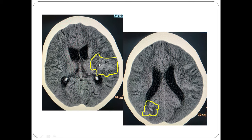In higher cuts, we can see there is hyperdensity within the left parietal cortical sulci, suggestive of acute subarachnoid hemorrhage. There was also some hemorrhage within the left sylvian fissure, and there is mild intraventricular hemorrhage in the occipital horn of the right lateral ventricle.